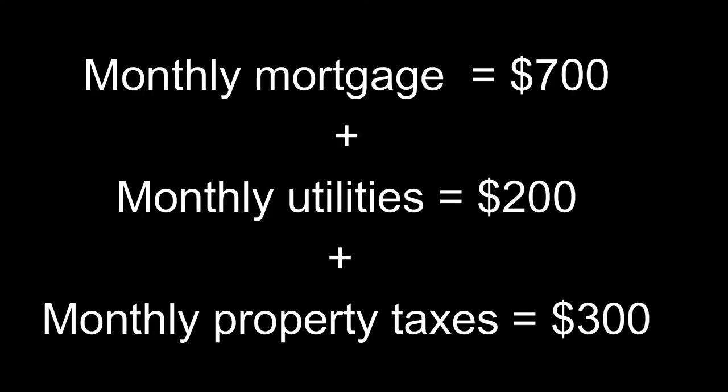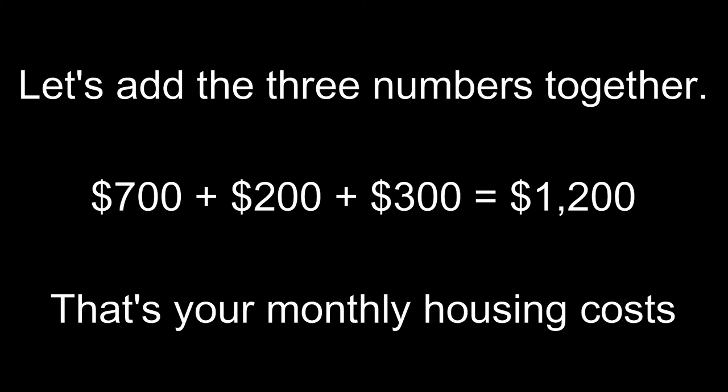For example, we will use $700 for our monthly mortgage, $200 for our utilities, and $300 for our monthly property taxes. When we add all three numbers, we get $1,200 for our monthly housing costs.